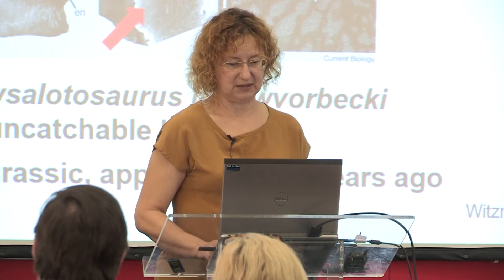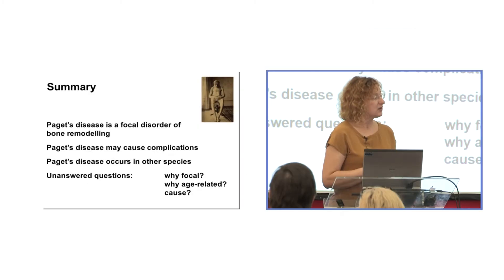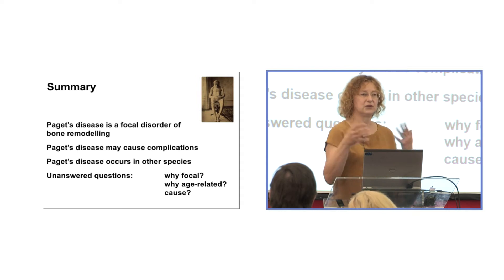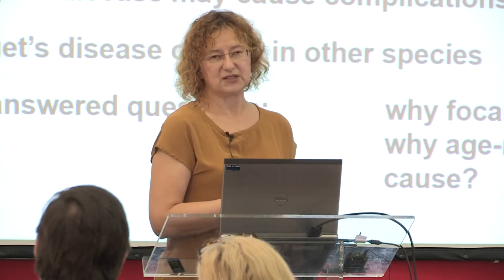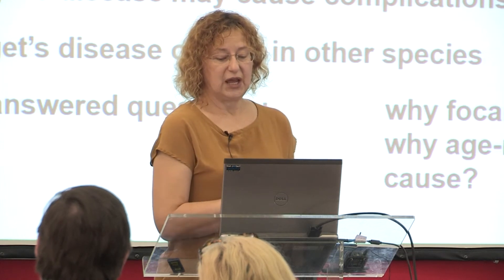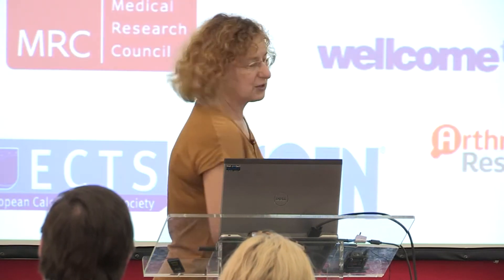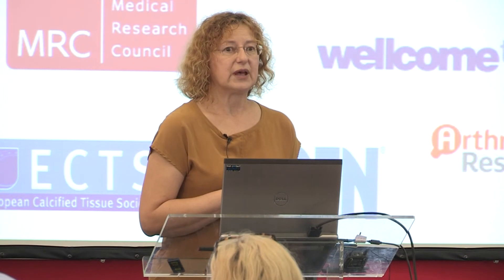Those dinosaurs lived 150 million years ago, which puts it in some perspective. In summary, Paget's disease is a focal disorder of bone remodelling, driven by abnormal osteoclasts. It can cause a number of complications. It is not unique to humans, and there are a number of unanswered questions: why is it focal, why is it age-related, and if there is a genetic predisposition, why don't we get Paget's disease in childhood? Obviously the genes don't change. And what exactly causes Paget's disease? Thank you very much for your attention.